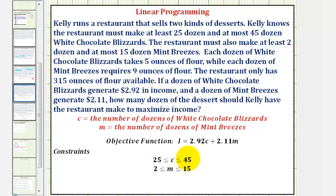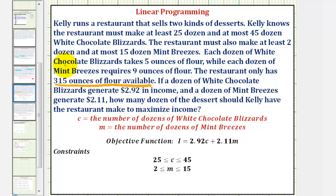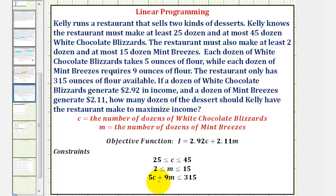So this would be our first constraint. There's also a constraint on M, the number of dozens of mint breezes. The restaurant must make at least two dozen and at most 15 dozen mint breezes, so M must be greater than or equal to two and less than or equal to 15. Now there's one more constraint based upon the amount of flour available. The store only has 315 ounces of flour available, and each C takes five ounces of flour and each M requires nine ounces of flour. So our last constraint is going to be 5C plus 9M must be less than or equal to 315.